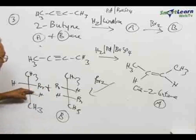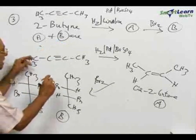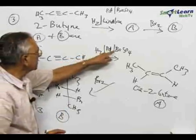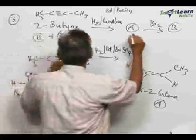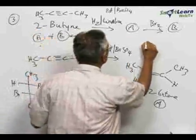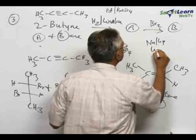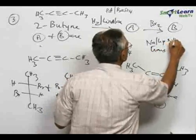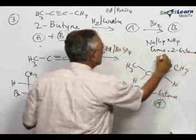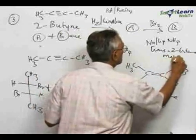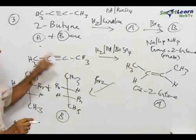So this is what is known as a DL mixture. This is the choice given in C. Normally, this reduction by means of palladium and barium sulfate will give rise to cis-2-butyne, whereas reduction of the same compound 2-butyne by means of sodium and liquid ammonia will give trans-2-butyne. The trans-2-butyne on bromination will give rise to a meso compound. So the answer for this question is C.